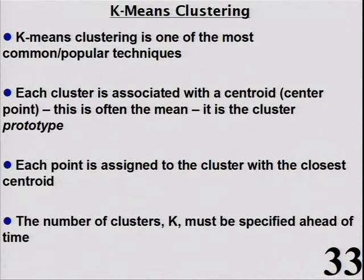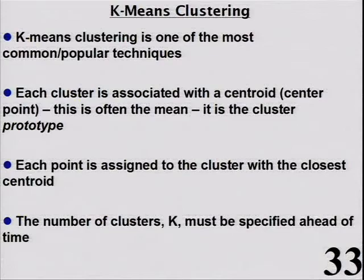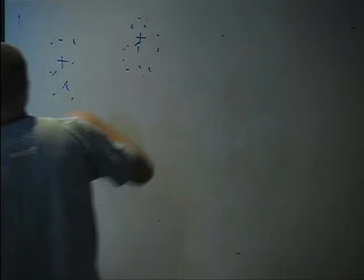In k-means, each cluster is associated with a centroid — this is often the mean, though it could be the median. The center is the cluster prototype. Each point is assigned to the cluster with the closest centroid: a new point goes to whichever centroid is nearest. The number of clusters k must be specified ahead of time — k-means won't choose k for you.